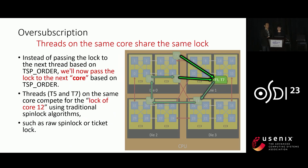To address these limitations, we developed a modified version of the RUN algorithm for over-subscription. Instead of passing the lock to the next thread based on TSP order, we now pass the lock to the next core based on TSP order. This means that threads on the same core will compete for the lock of that core using traditional spinlock algorithms like raw spinlock or ticket spinlock. For example, threads T5 and T7 on the same core will compete for the lock of core 12 using the chosen spinlock algorithm, allowing effective resource utilization in over-subscribed scenarios while maintaining fairness.